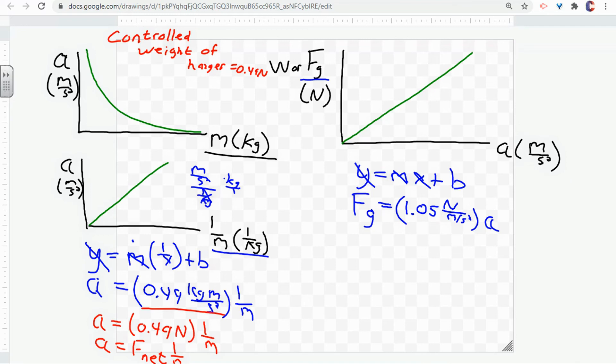Now, if we come over to our other example here, we've got the gravitational force is equal to 1.05 Newtons per meter per second squared times acceleration. So let's look at the units on the slope and see how the units work out.